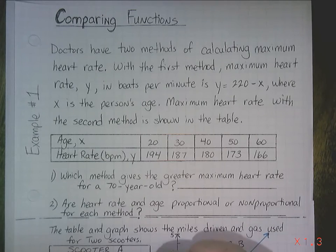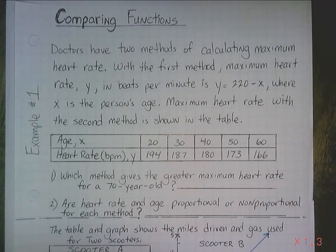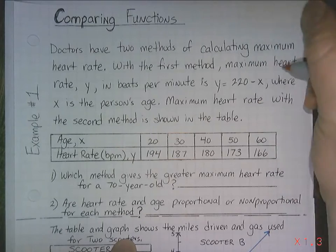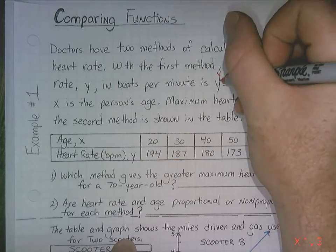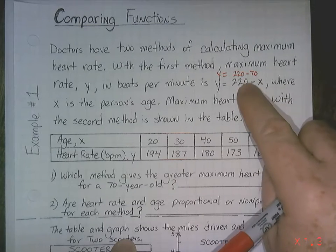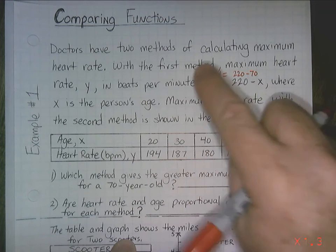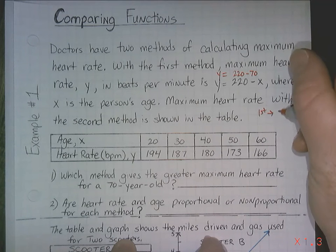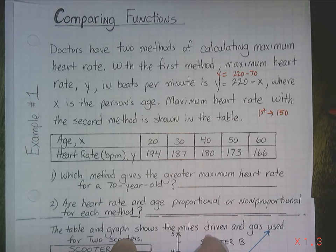So number one, which method gives the greater maximum heart rate for a 70-year-old? Well, we don't have a 70-year-old here at that chart. We could take 70 for this method, we could just simply do 220 minus 70. That would give us our value for y. So that would be 150. So 150 would be the first method. The first method gives us a heart rate of 150 beats per minute. That's going to be the maximum heart rate for a 70-year-old for the first method.